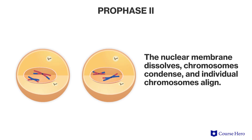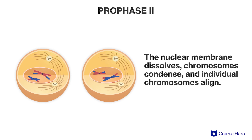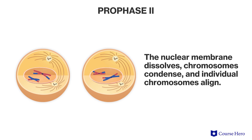The first stage of meiosis two is prophase two, and we see events similar to what we saw in prophase one. The spindle apparatus containing the spindle fibers forms, the chromosomes condense again, and the nuclear membrane that surrounds them dissolves.